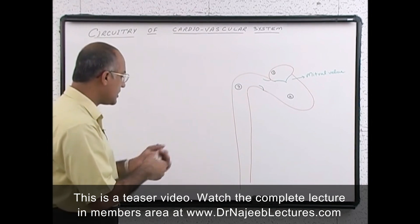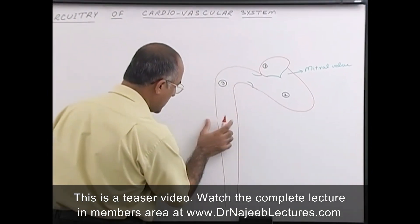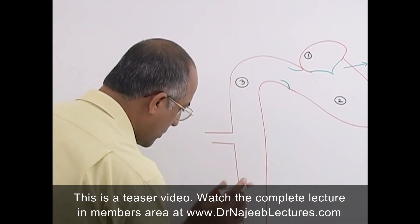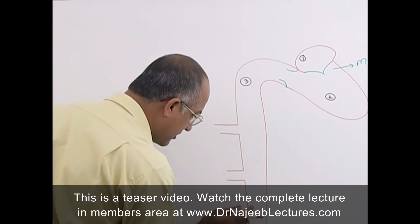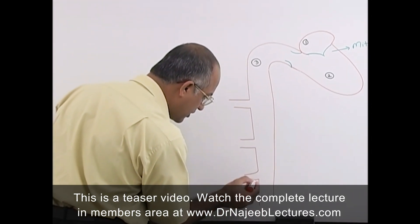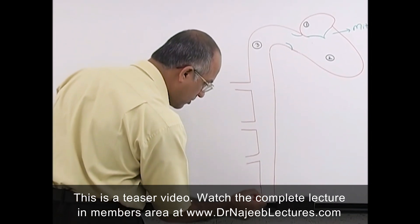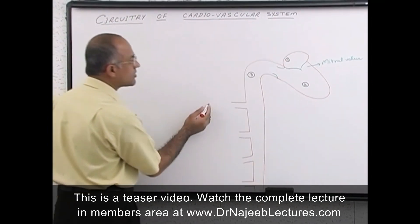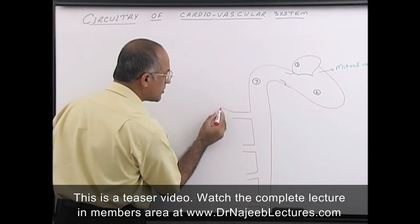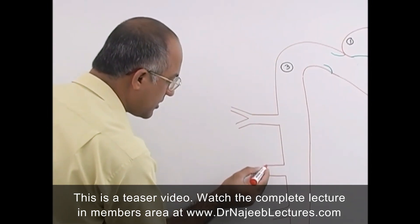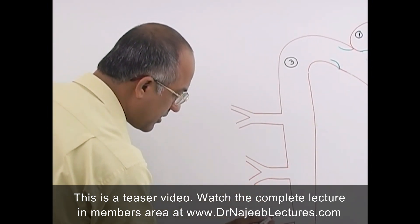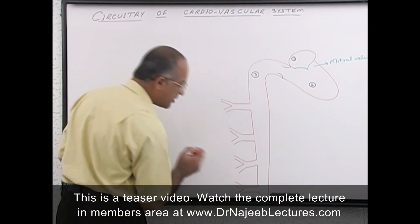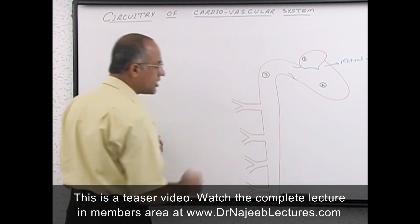From the aorta, branches called arteries carry blood outward. These large and medium-sized arteries progressively go into smaller arteries, and eventually these smaller arteries break down into the smallest branches called arterioles. Arterioles are the smallest branches of the systemic arterial tree.